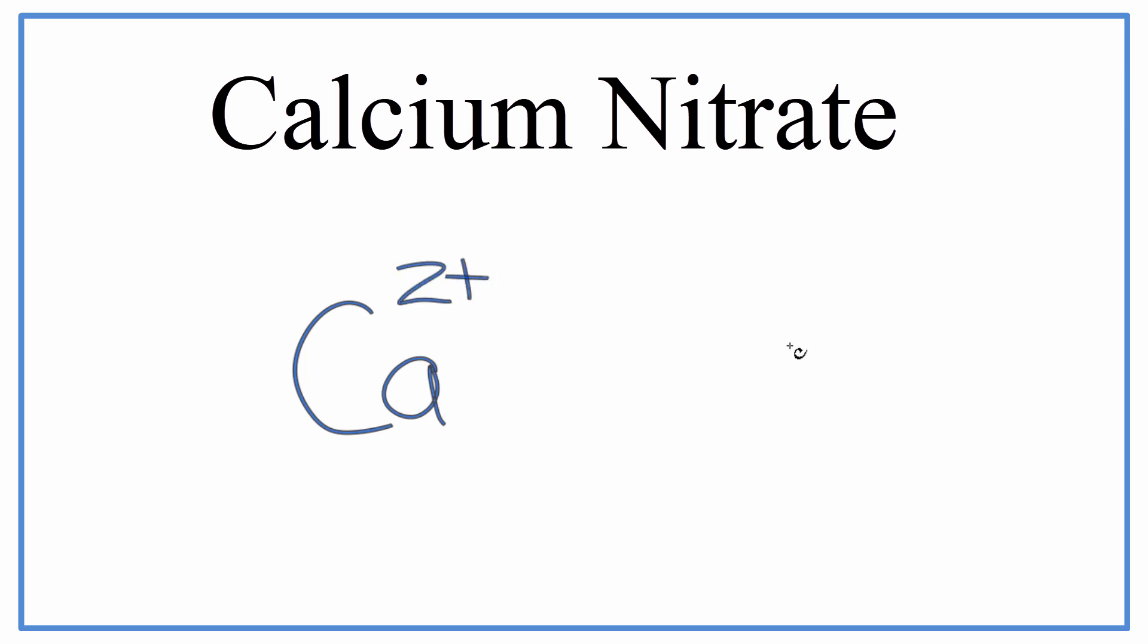Next we'll look at the formula for the polyatomic ion, that nitrate, and on the common ion table, we can see that it's NO3 and it has a charge of minus 1.